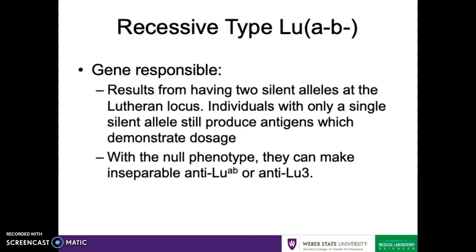The next inheritance pattern is the recessive type, and this happens at the Lutheran locus. Inheriting two silent alleles at this locus is going to result in a true null phenotype, where there are no Lutheran antigens whatsoever. Individuals with only a single silent allele are still going to produce antigens, and those are going to demonstrate dosage. But those with two silent alleles are going to lack any antigens whatsoever, and they will be susceptible to making antibodies against Lutheran antigens — including anti-Lutheran 3, which again is a very rare antibody.